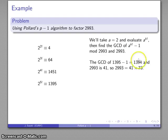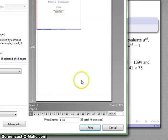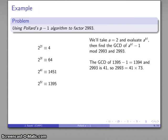The greatest common divisor of the number minus 1 is 41, and that gives us one factor.